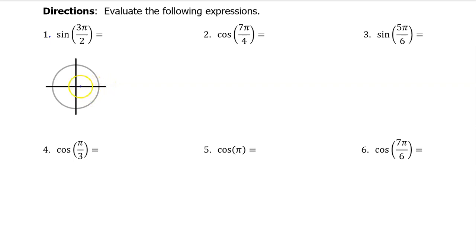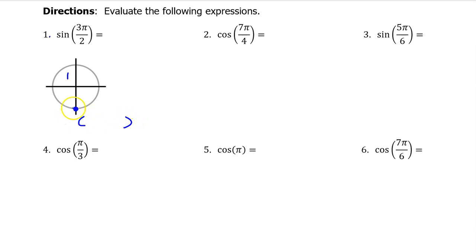The unit circle is just a circle with a radius of 1. Every quadrant has a measure of pi over 2 radians, so 3 pi over 2 is a multiple of that: 1 pi over 2, 2 pi over 2, 3 pi over 2. Because this is a unit circle, I can easily find the coordinates of this point — it is the point (0, negative 1).